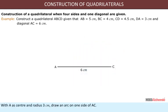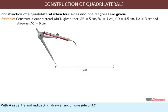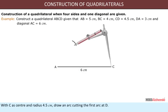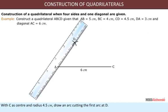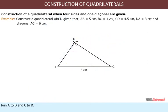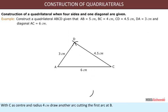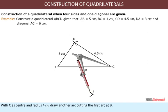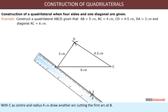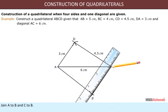Join A to D and C to D. With A as center and radius 5 cm, draw an arc on the other side of AC. With C as center and radius 4 cm, draw another arc cutting the first arc at B. Join A to B and C to B. Then ABCD is the required quadrilateral.